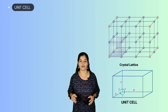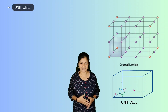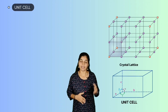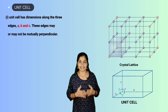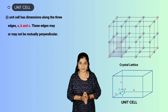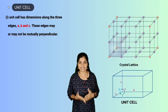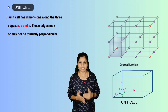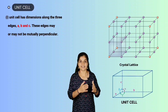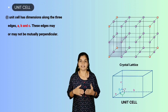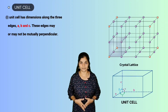The unit cell has dimensions along three edges A, B, and C. These edges may or may not be mutually perpendicular. The angle between edges B and C is termed alpha, the angle between edges A and C is beta, and the angle between edges A and B is gamma.